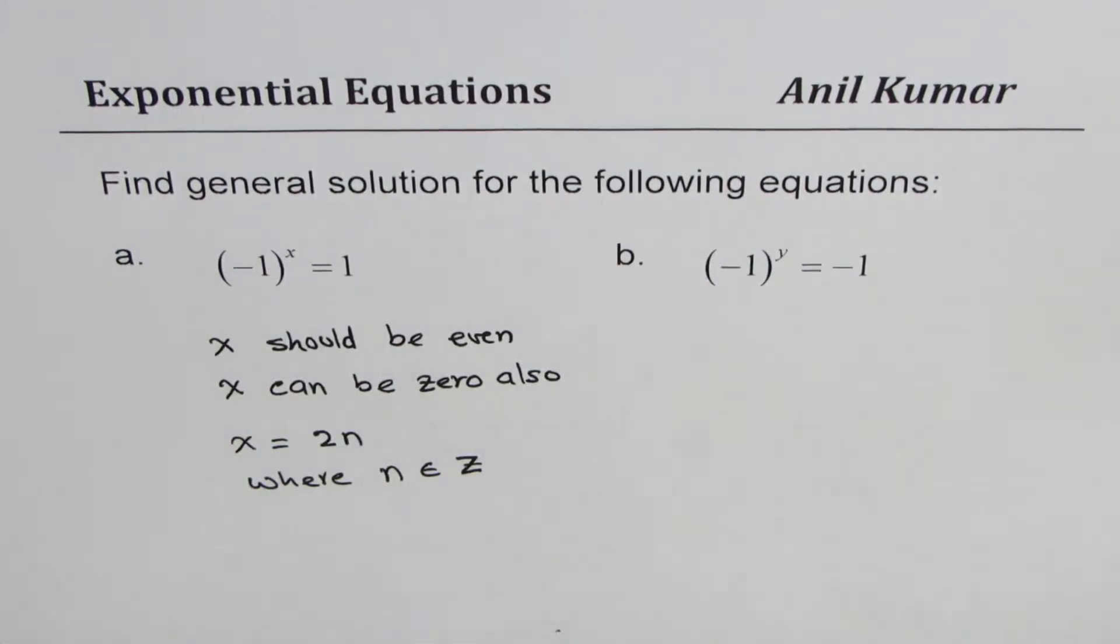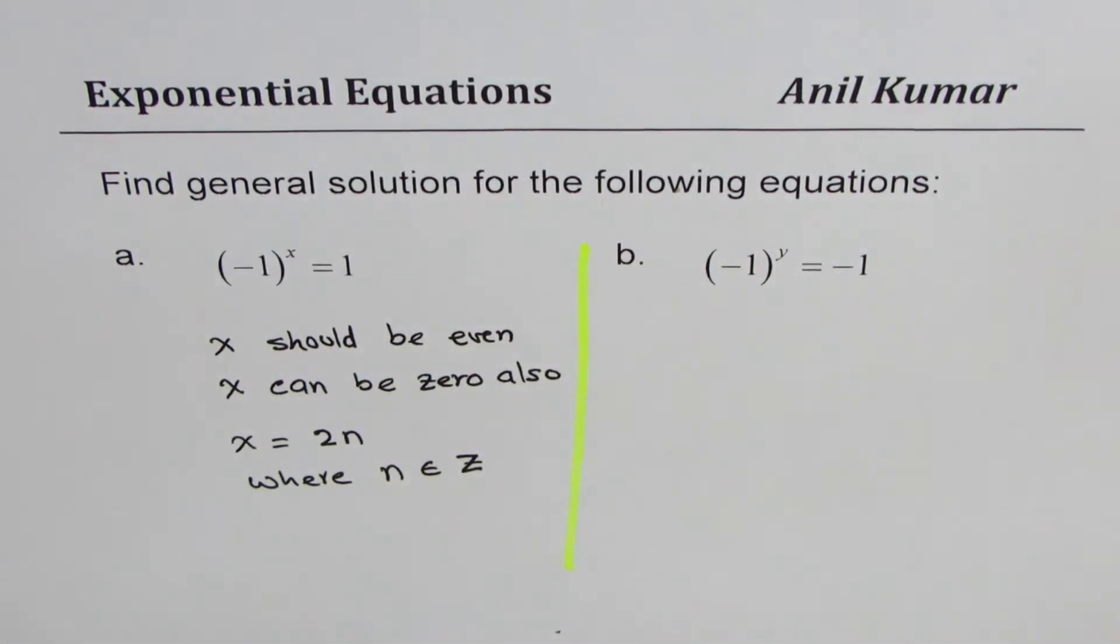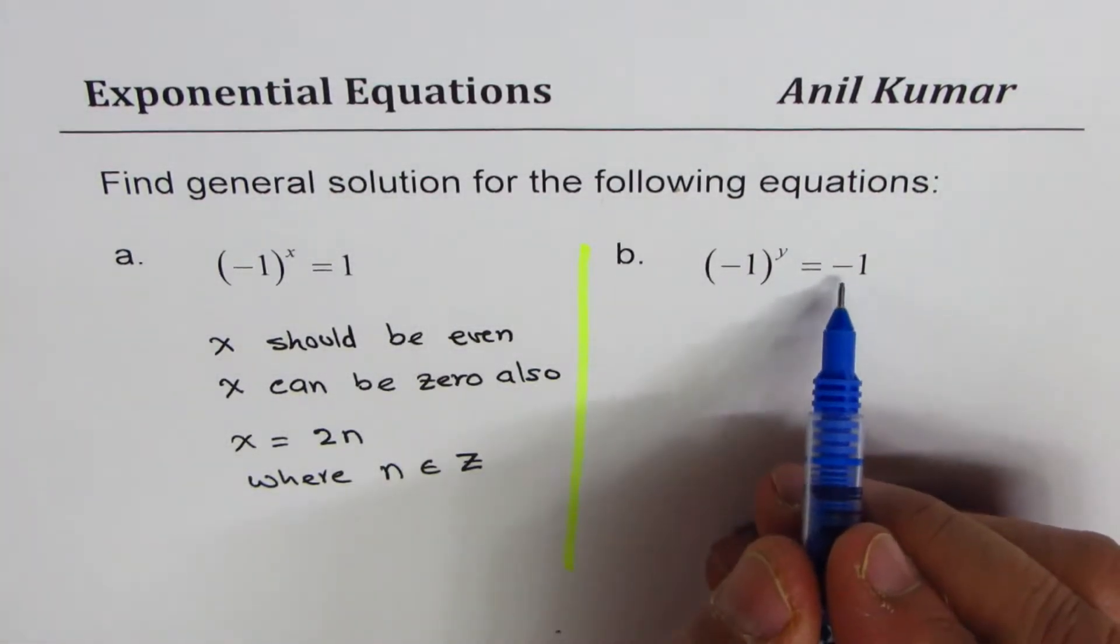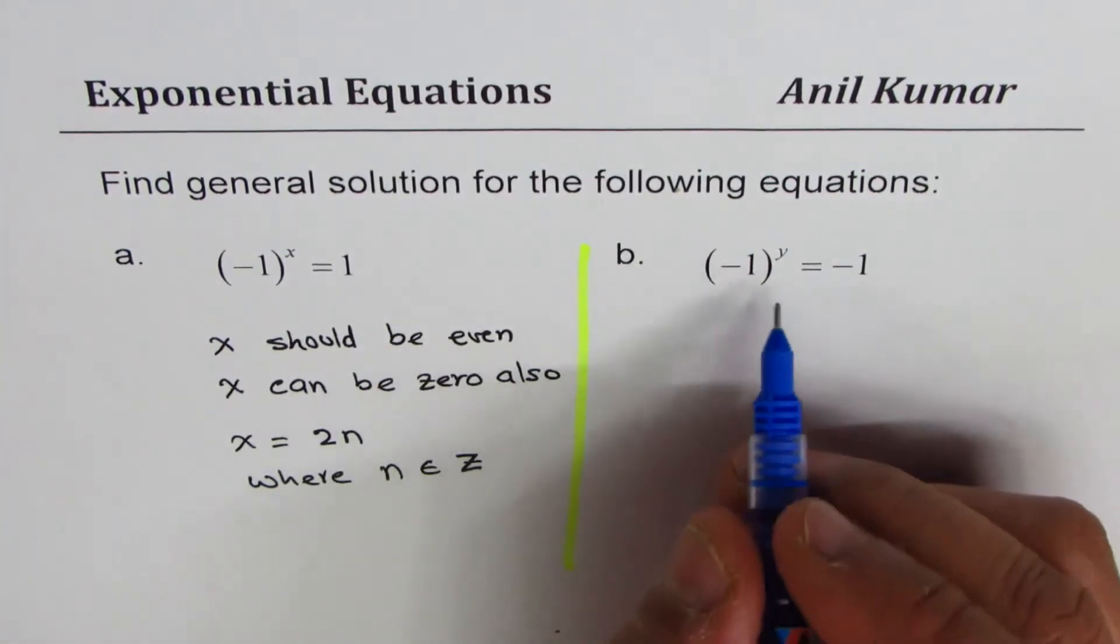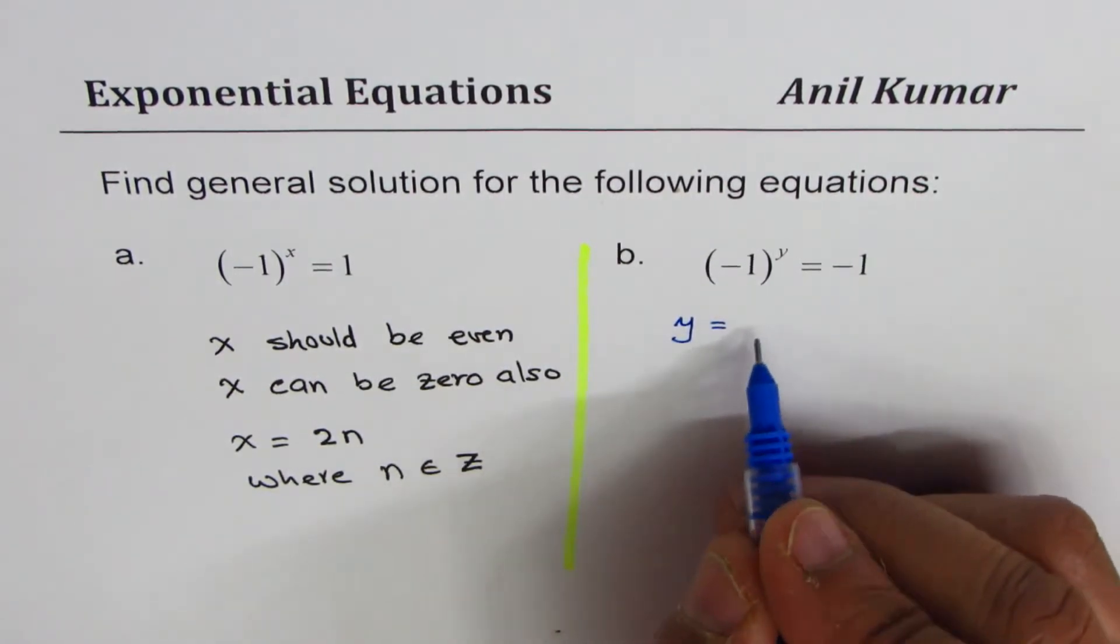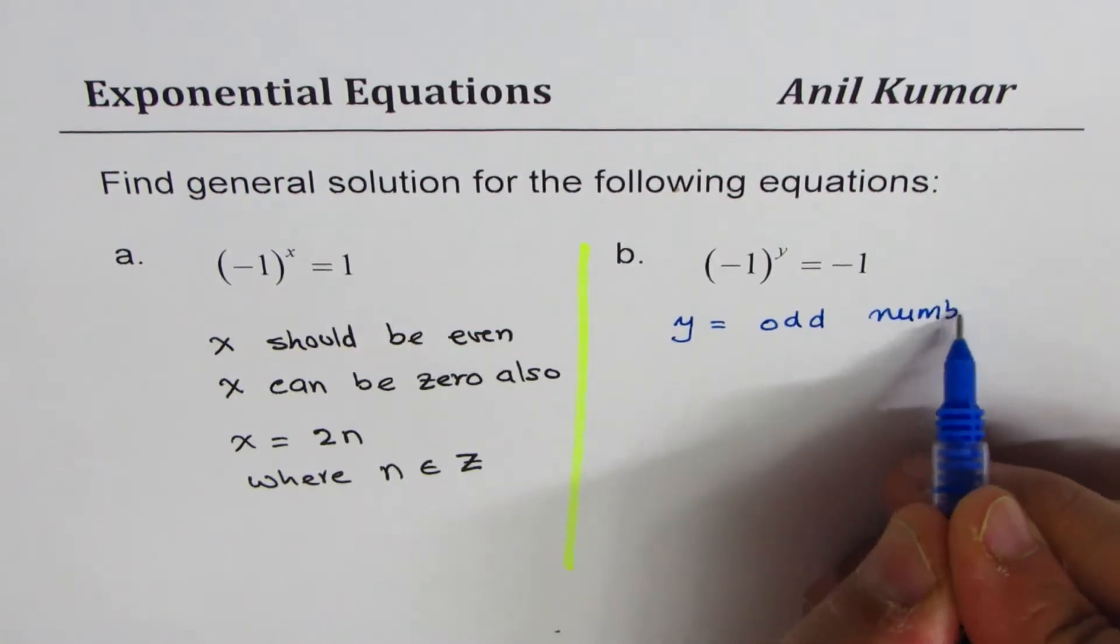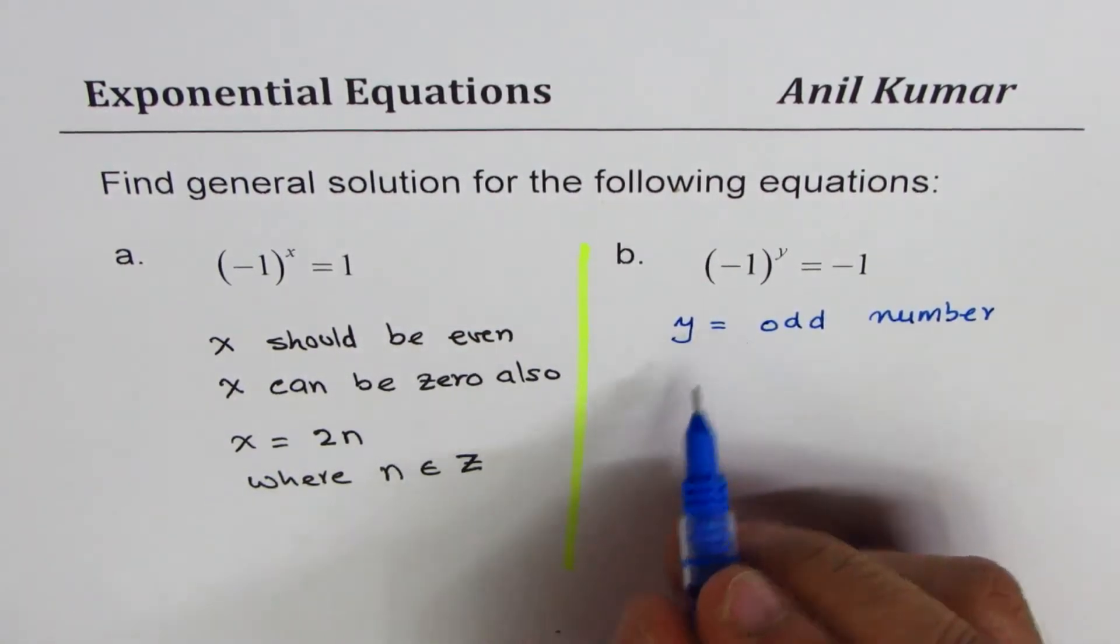Now let's see part b. Here we want -1, so in this case y should be equal to an odd number. y should be odd number. So in general we can say...